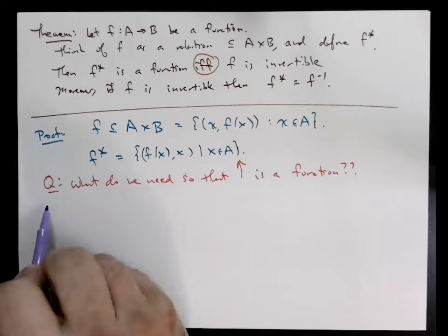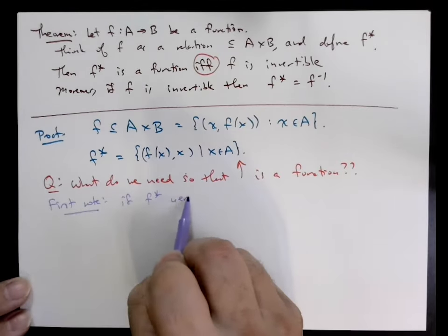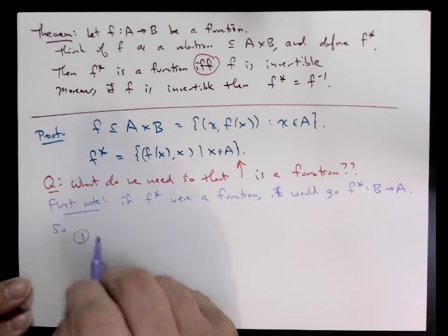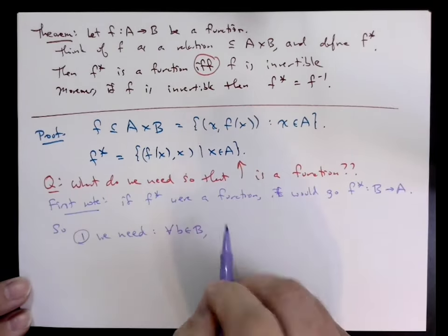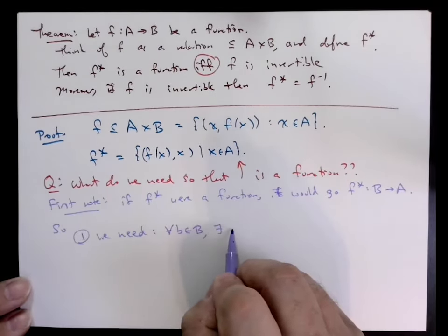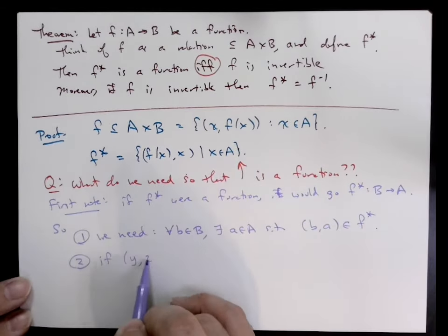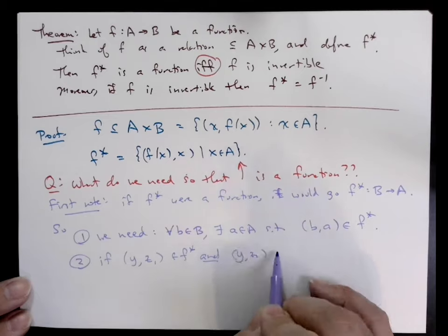So here's the proof. Let's think of F as a relation on A to B. So F is a subset of A cross B of the form (x, f(x)) for all x in A. F* is exactly the pairs (f(x), x) for x in A. What do we need for F* to be a function from B to A?